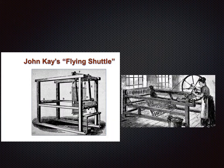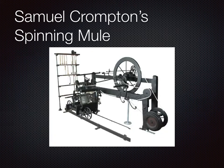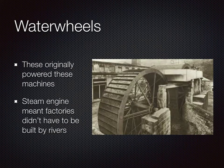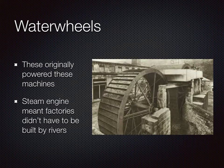Advancements in the textiles industry — including Samuel Compton's spinning mule and Edmund Cartwright's power loom — were powered by water wheels, a type of hydropower. This meant that textile factories had to be built near rivers to access water to power the wheel. But with the introduction of the steam engine, the machines could be more powerful and factories could be built anywhere.